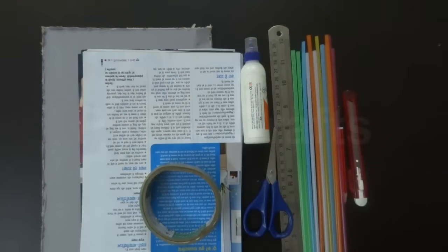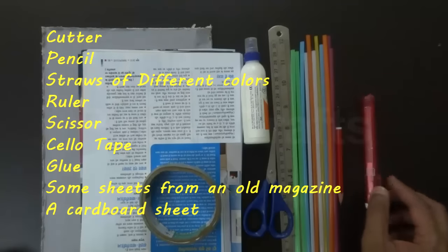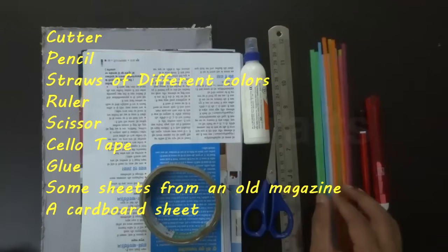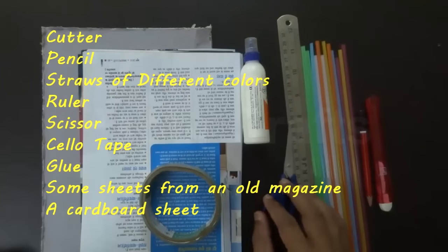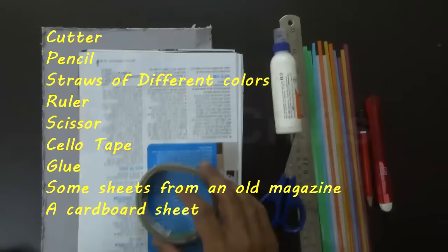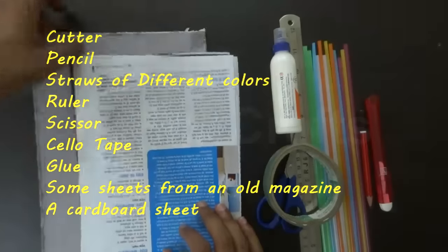To make this multicolored lamp shade you may need a cutter, pencil, straws of different colors, a ruler, a pair of scissors, glue, cellotape, some sheets from an old magazine and a cardboard.